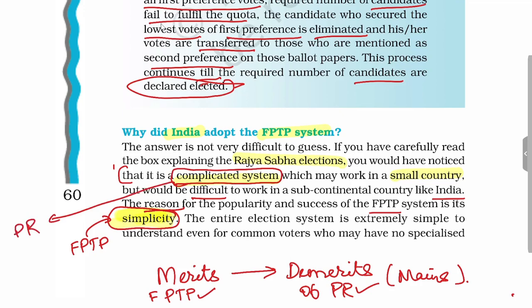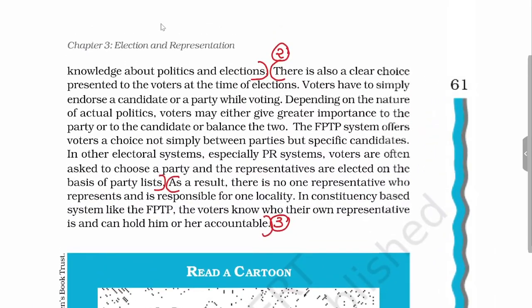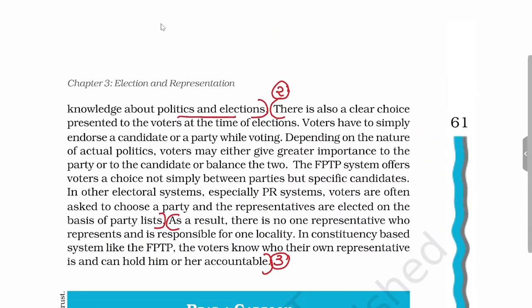In India, the entire election system is very simple for common voters. Because of the large amount of illiteracy in India, it is difficult for common voters to understand a complex system like proportional representation. The election system under FPTP is very simple to understand from the common voter's point of view, and it requires no specialized knowledge about politics and elections.